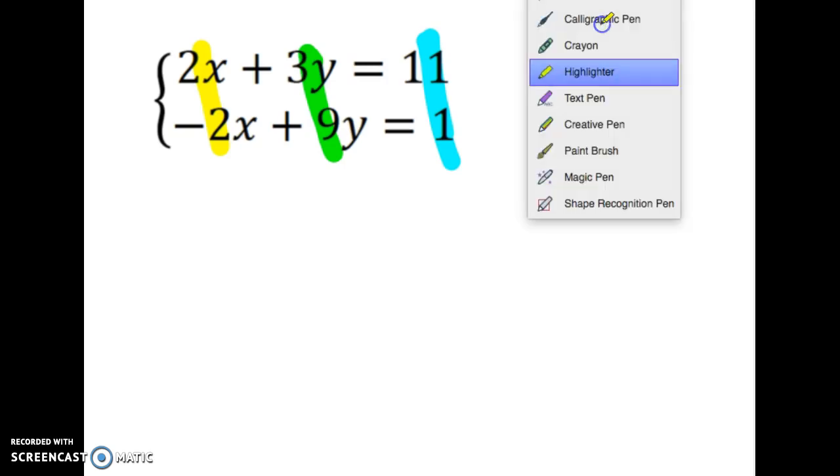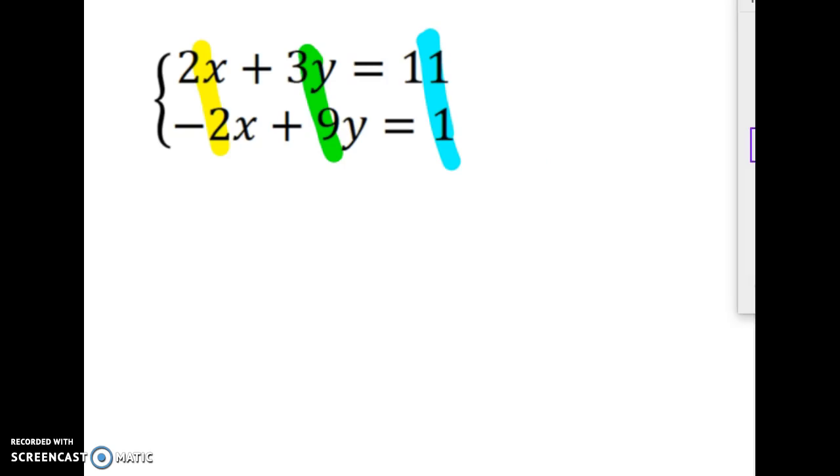Second, we have to make a pair of terms opposites, either x's or y's. And notice 2x and negative 2x, the x's are already opposites. So that's ideal. When that happens, you can go straight to step 3, which is perfect.